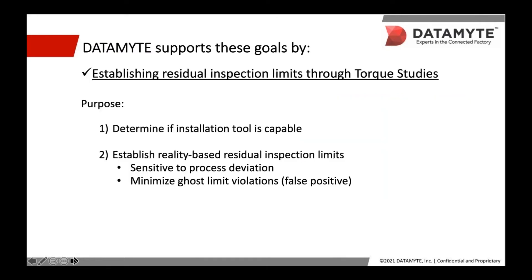How do we meet these goals? It's important to start by establishing residual torque limits through torque studies. Inspection limits need to be calculated early in the process to confirm that the process is still capable. A torque study will also help determine, one, if the installation tool is capable — a tool that is not capable will be a source of constant non-conformance — and, two, if the reality-based residual torque inspection limits are sensitive to process deviations, thereby minimizing false positive and false negative violations.